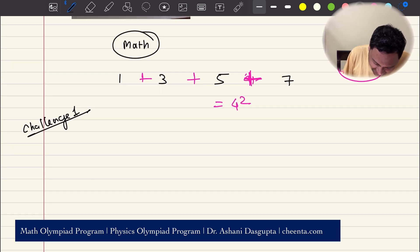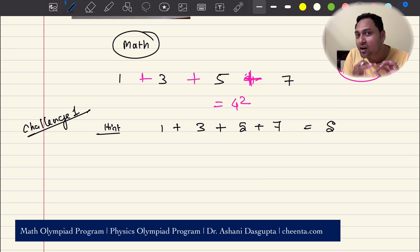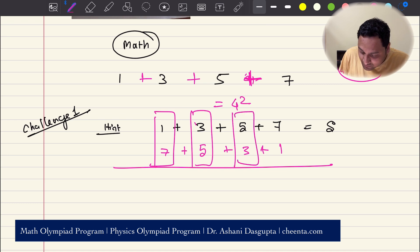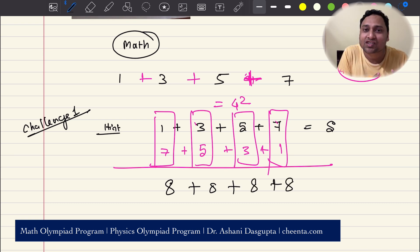I'll give you a hint. If you want to add 1, 3, 5, and 7, let's suppose this is S, just write it in the opposite order: 7, 5, 3, 1. Notice that each of the columns add up to the same number, 8. This is the hint to solve the first challenge problem. Can you do it? If you can, put it in the comment section.